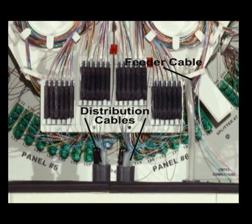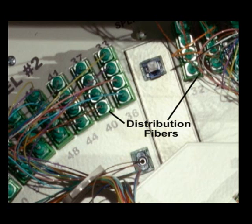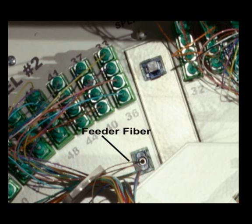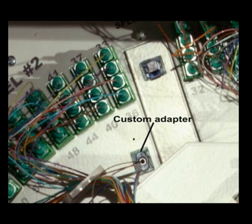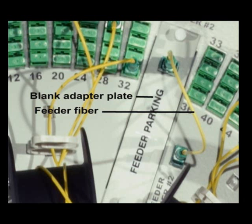The unit is configured with feeder and distribution cable stubs that are pre-connectorized at the factory. The distribution fibers are patched in the rear of the cabinet. The feeder fibers are placed through the faceplate from the rear to the front with custom adapters, which provide structural security, and are terminated into a blank adapter plate on the front of the faceplate.